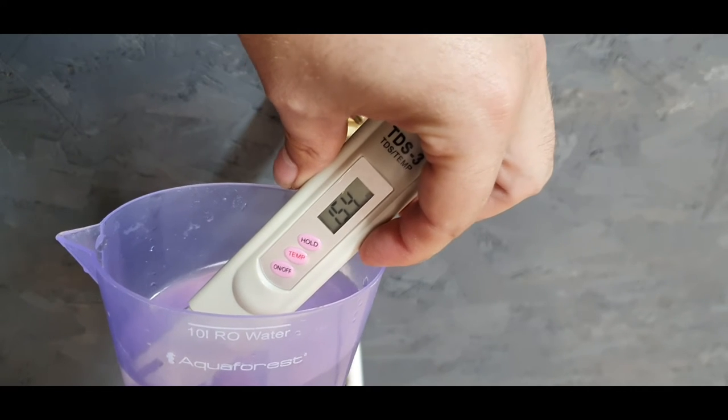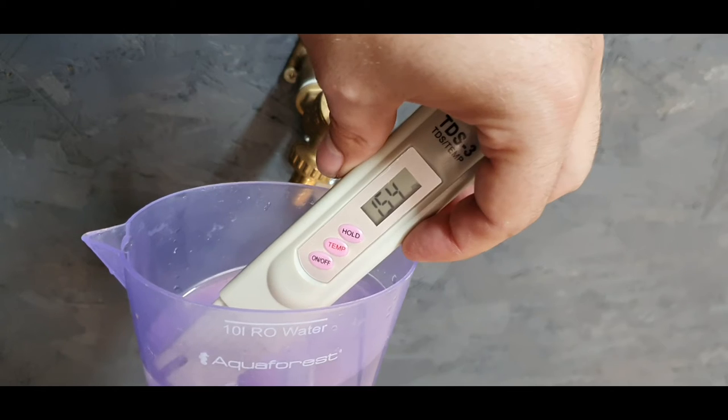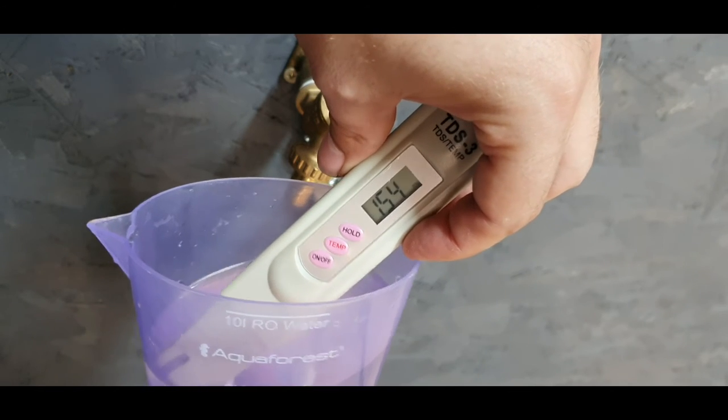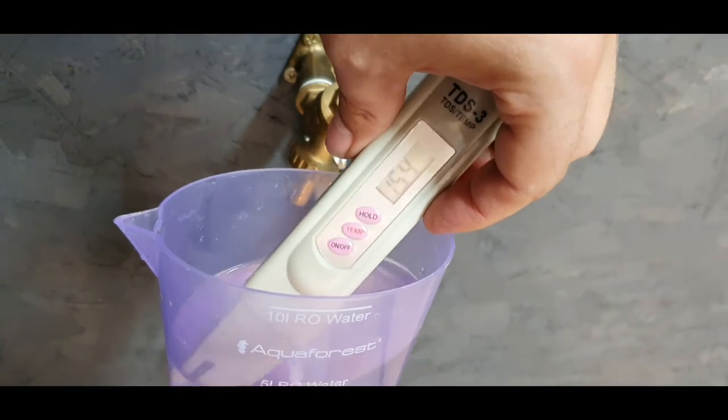But in a saltwater aquarium, that would be absolutely disastrous because that 154 could be made up of anything: nitrates, phosphates, pesticides, all sorts of stuff. So that's what we want to remove and that's what the RO basically removes.